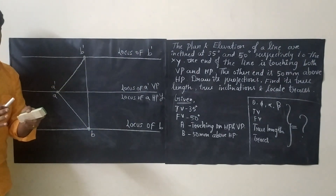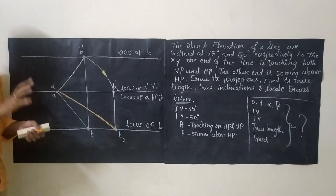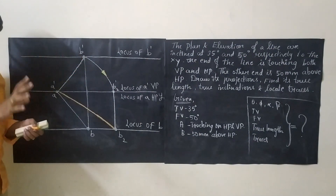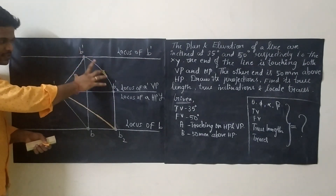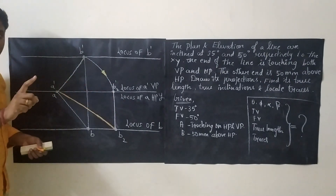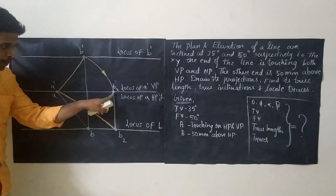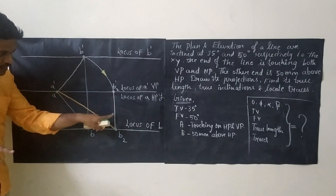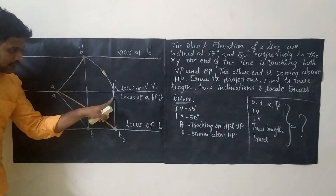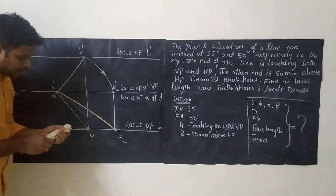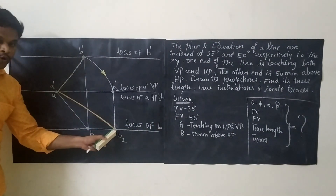Once we fix the four loci, drawing the complete diagram is straightforward. To determine the true length, we rotate either the front view or the top view. Take your compass with radius A-dash B-dash, keep the compass at A-dash, and rotate an arc. This arc cuts the locus of A-dash at one point called B2-dash. Then extend B2-dash vertically to the locus of B, and that point is called B2.